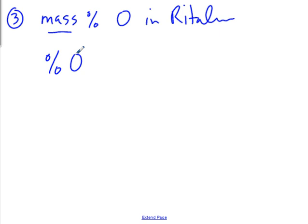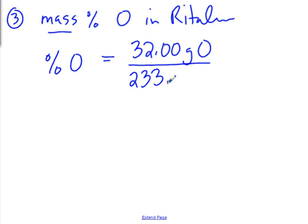Kinsley, what would I do there? You would take the mass of oxygen. So there were 32 grams of oxygen, back in question two, divided by the molar mass of the compound, 233.34, and times by 100. And that's going to give you the mass percent of oxygen, right? Watch your sig figs.